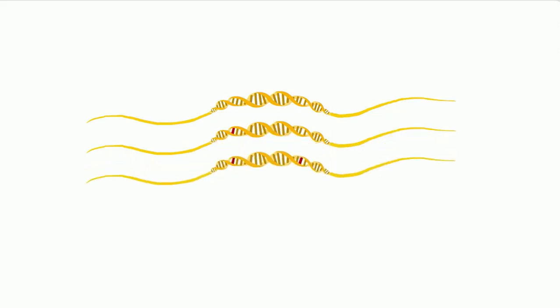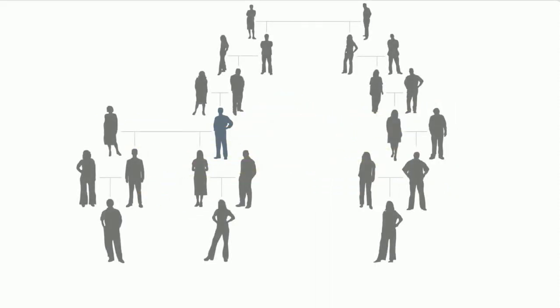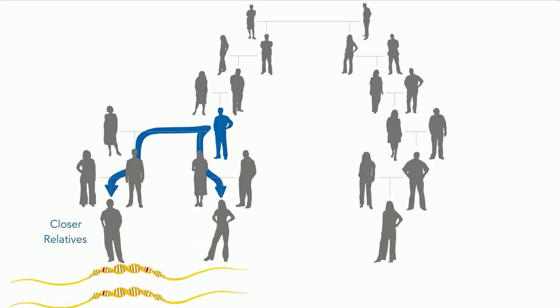As DNA is copied and passed down through generations, it gradually accumulates more mutations. People who are more closely related have few differences in their DNA. People who are more distantly related have more differences.